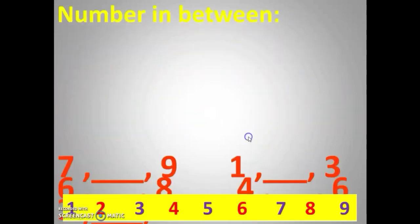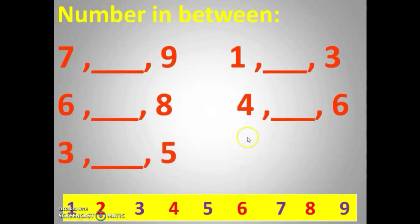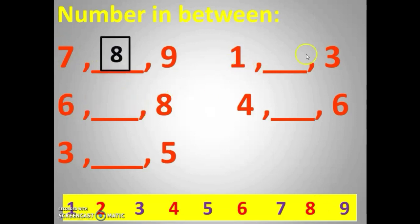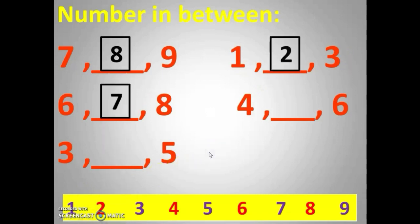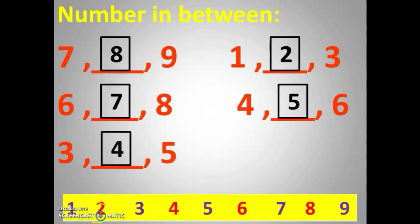Now next is numbers in between — a bit interesting and you already know it. What is between seven and nine? Eight. What is between six and eight? Seven. Between one and three? Two. Between four and six? Five. Between three and five? Four. You can find it easily from the number strip, or say the three consecutive numbers and check: seven, eight, nine; six, seven, eight; four, five, six.